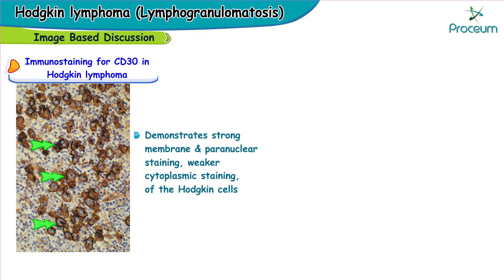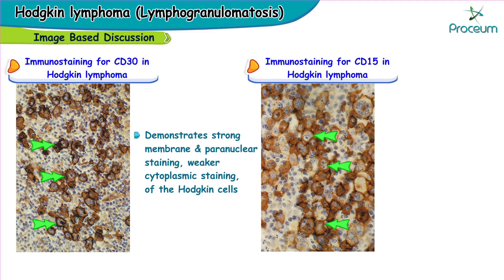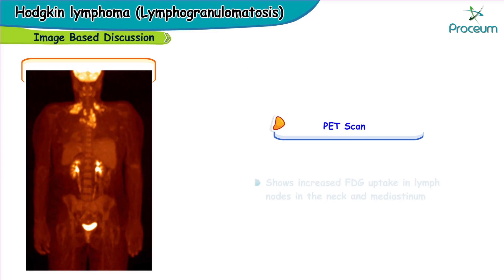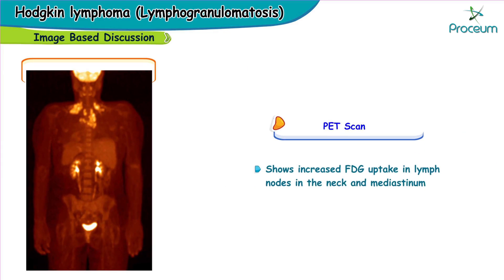Here is a zoomed-in version showing immunostaining for CD15 in Hodgkin's lymphoma. Immunostaining for CD15 demonstrates strong membrane and paranuclear staining of the Hodgkin's cell. Here is a PET scan image showing increased fluorodeoxyglucose uptake in lymph nodes in the neck and mediastinum, consistent with Hodgkin's lymphoma.